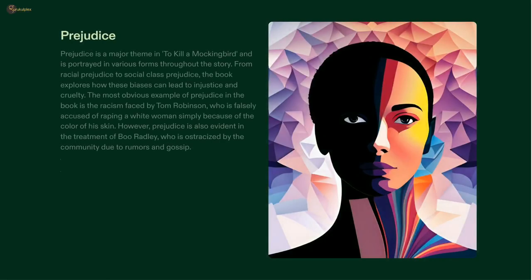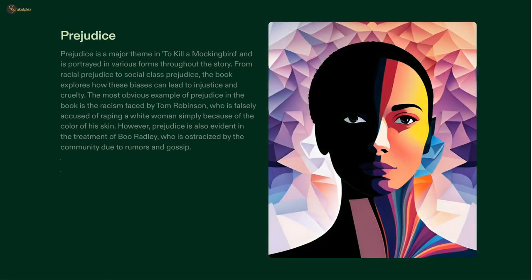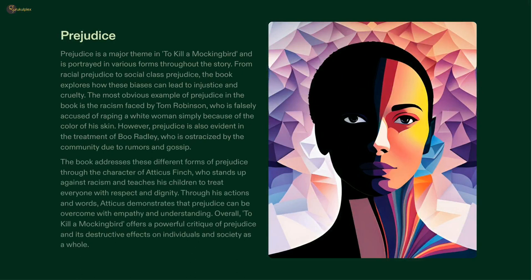Prejudice has long been known to cause immense damage to societies, with Harper Lee's To Kill a Mockingbird serving as a perfect example of the multiple forms it can take. Racism is illustrated through the false accusation of rape against Tom Robinson, while social class prejudice is depicted through the suspicion and ostracization of Boo Radley. Atticus Finch serves as a symbol of justice, teaching us to combat the effects of prejudice and show respect for all individuals. Through his model of morality, we can recognize the importance of fighting prejudice in order to build a better world.